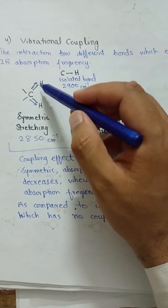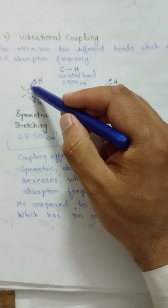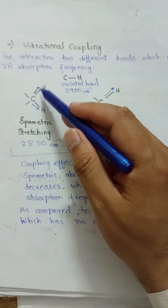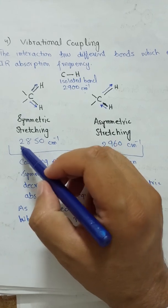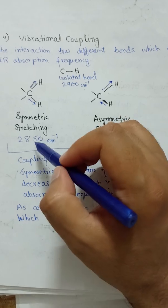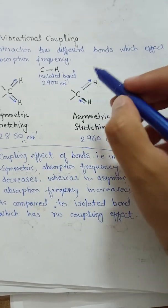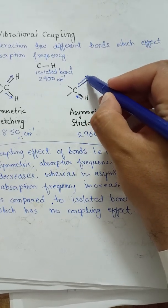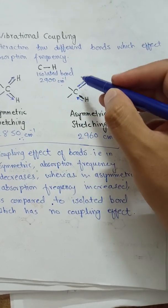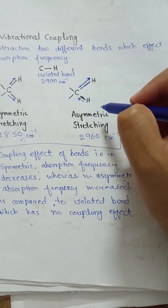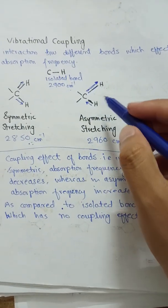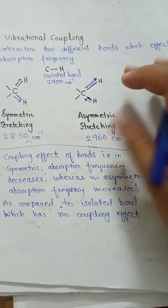In symmetric stretching, both C-H bonds stretch in the same direction, affecting each other and decreasing the absorption frequency to 2850 cm⁻¹. In asymmetric stretching, one bond becomes longer while the other becomes shorter. In this case, the absorption frequency increases from the isolated bond value to 2960 cm⁻¹. Asymmetric stretching therefore enhances the vibrational absorption frequency.